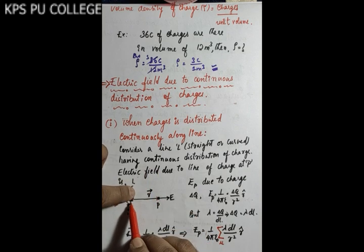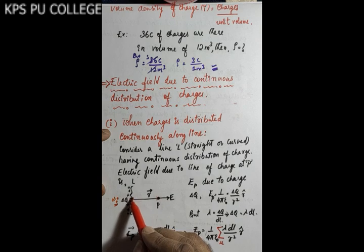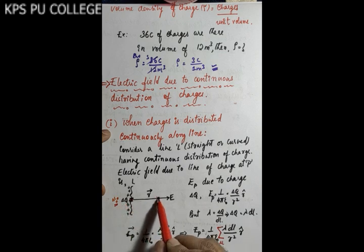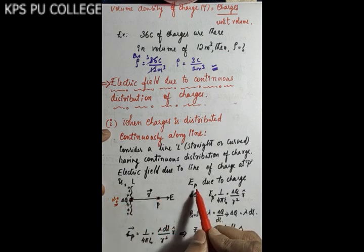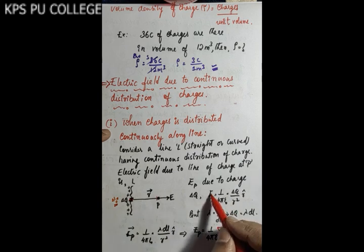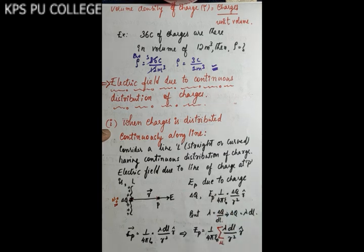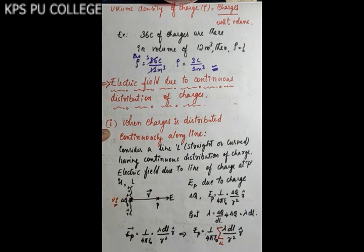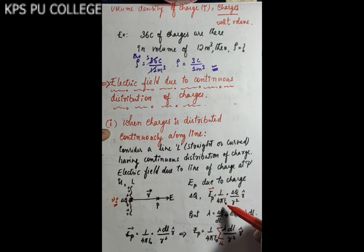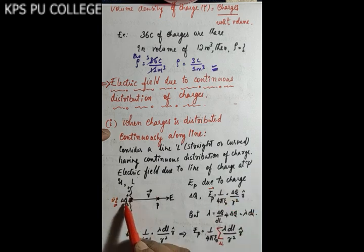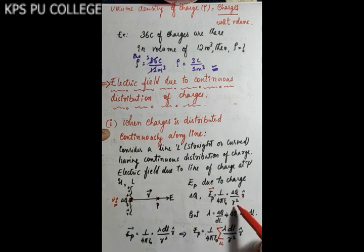First, we consider a small length element delta l. All charges in delta l contribute charge delta q. The electric field at point P due to this small element delta l is: vector E_p = (1/4πε₀) × (δq / r²) × r̂, where r̂ gives the direction of the electric field.